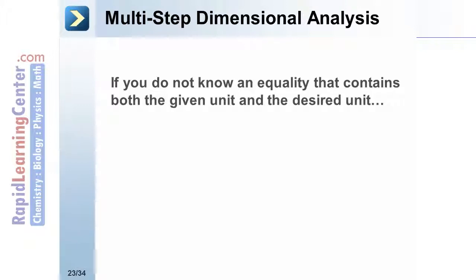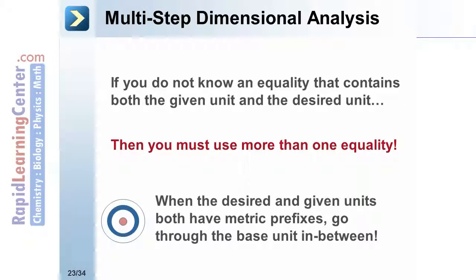If you do not have an equality that contains both the given unit and the desired unit, then you must use more than one equality. When both the given and desired have metric prefixes, you must use the base unit as a bridge between the two prefixes.